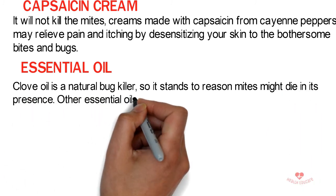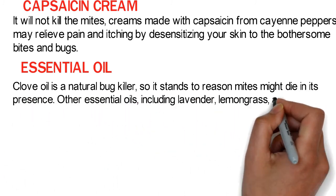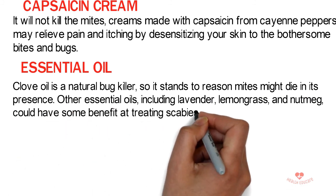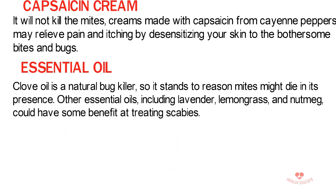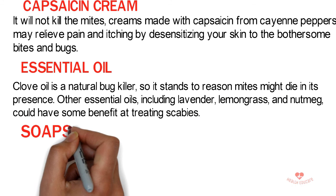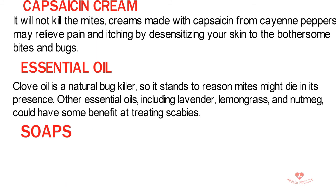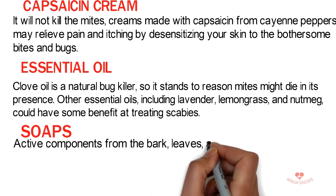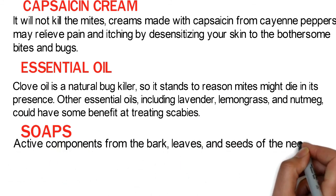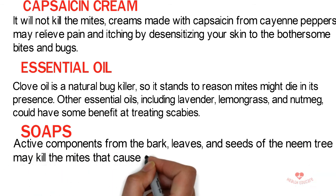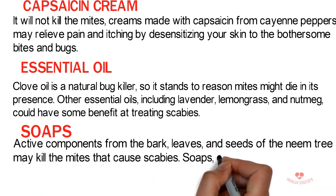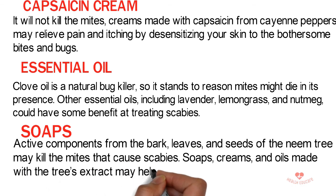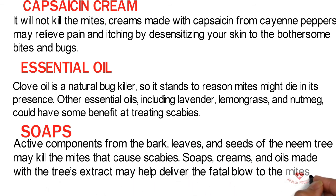Other essential oils, including lavender, lemongrass, and nutmeg, could have some benefit at treating scabies. 5. Neem soaps — active components from the bark, leaves, and seeds of the neem tree may kill the mites that cause scabies. Soaps, creams, and oils made with the tree's extract may help deliver the fatal blow to the mites.